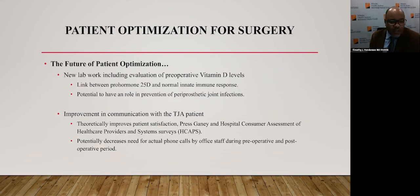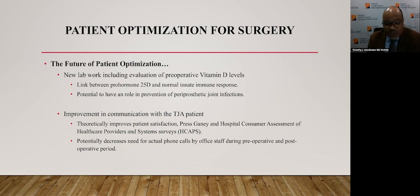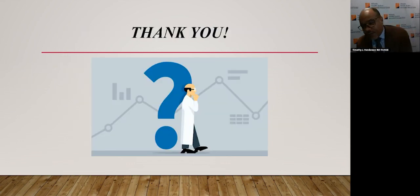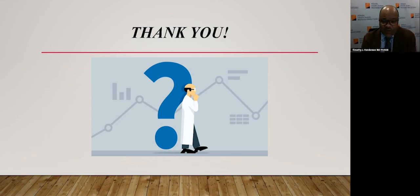The future of optimization: there's new lab work being evaluated, including preoperative vitamin D levels. There's a link between prohormone vitamin D25 and the normal innate immune response, with potential for a role in prevention of periprosthetic joint infections. Also, improvement in communication with the total joint arthroplasty patient may be part of patient optimization — this theoretically improves patient satisfaction, Press Ganey scores, and HCAHPS scores, and potentially decreases the need for phone calls by office staff during the preoperative and postoperative period. That completes my talk on the latest in total joint replacements, Medicare changes, CJR and CJR changes, and patient optimization. If there are any questions, I'd love to hear them.